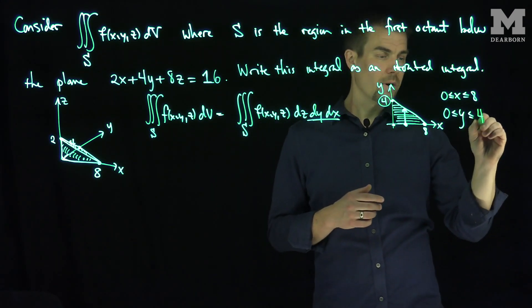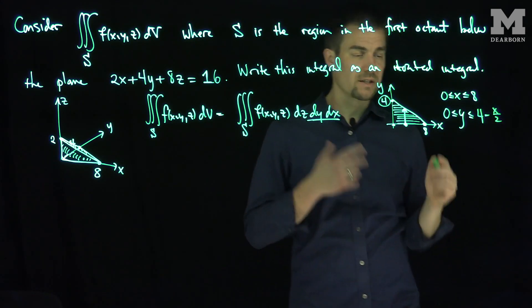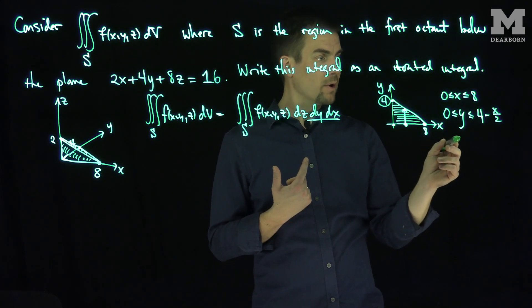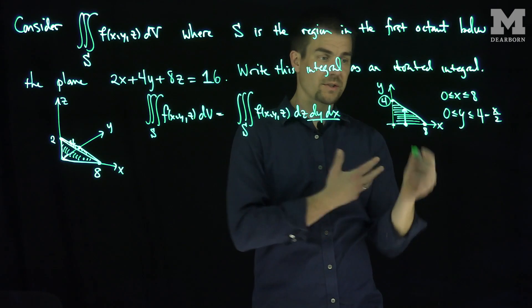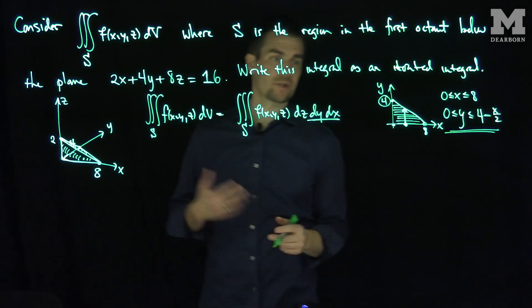So this line over here is 4 minus x over 2. We can check this. If x is equal to 0, I get to 4. If x is equal to 8, I get to 4 minus 8 over 2. 4 minus 8 over 2 is 0, and that gives us this point over here. So that's my y-region of integration. That's my x-y-region of integration.